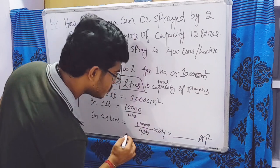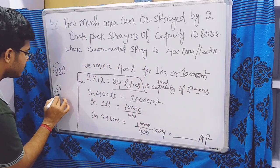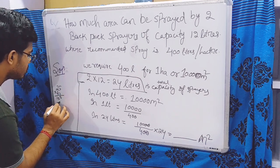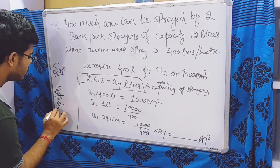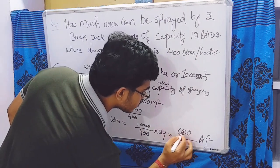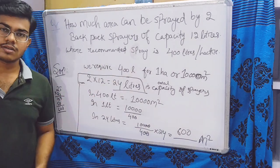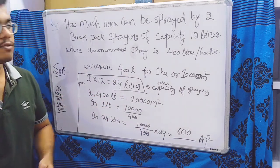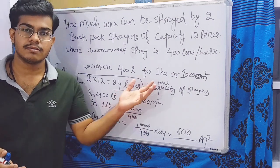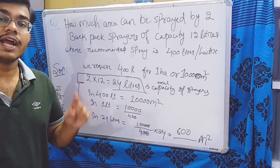Solving this: 10,000 ÷ 400 = 25, and 25 × 24 = 600 square meters. So the two backpack sprayers with a combined capacity of 24 liters can spray 600 square meters at once, given the recommended dose of 400 liters per hectare.